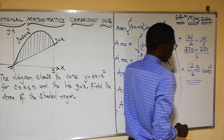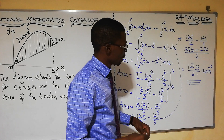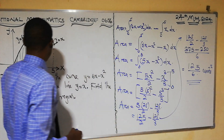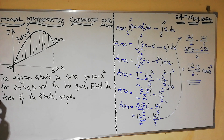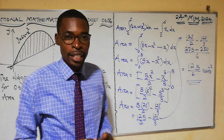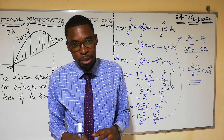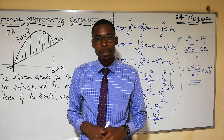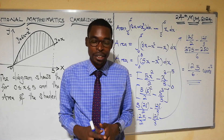This is our area — the shaded part of the diagram — 125/6 square units. I hope and believe that you enjoyed the lesson. Please don't forget to subscribe to my YouTube channel, Mathematics Made Easy with Mr. Banda. God bless you.